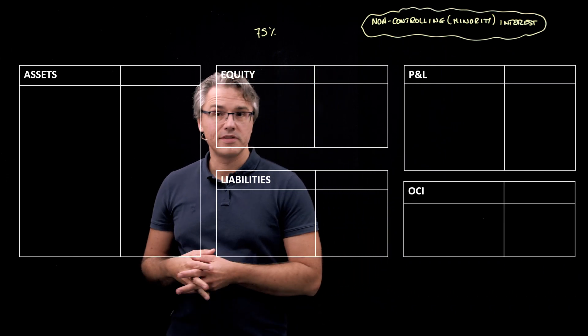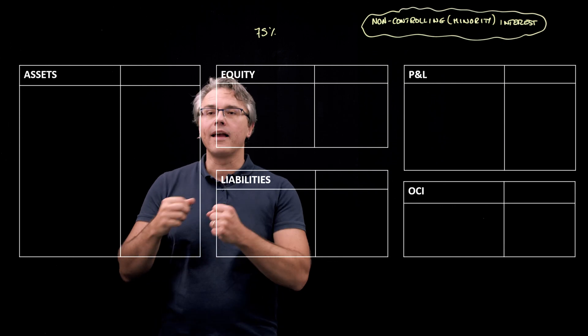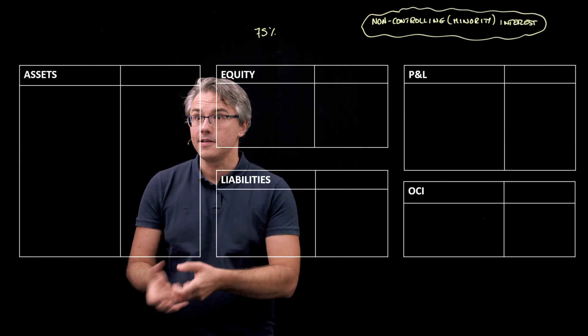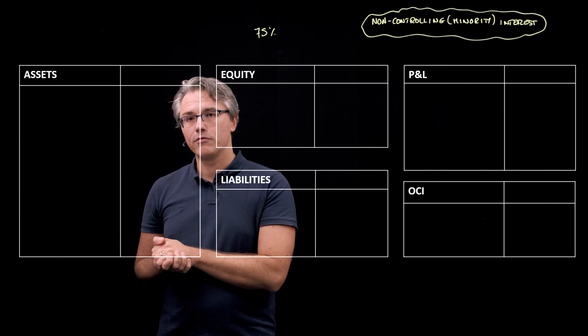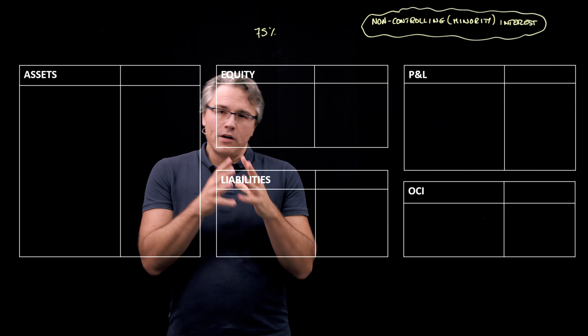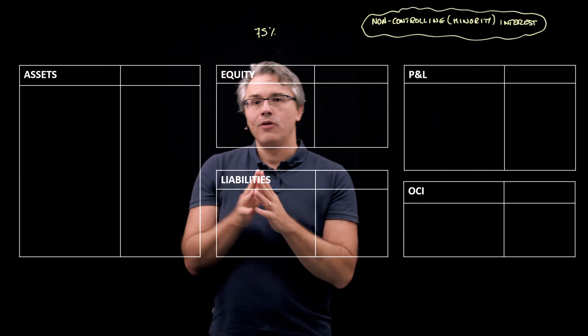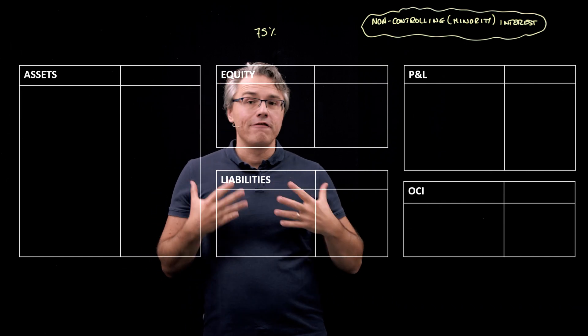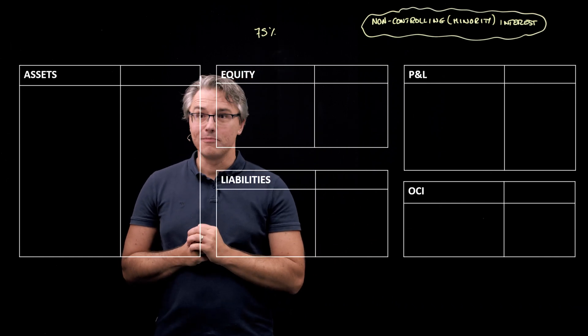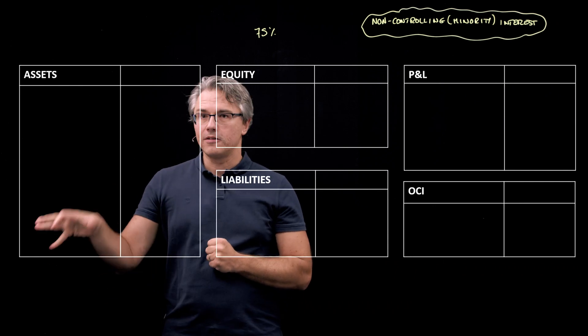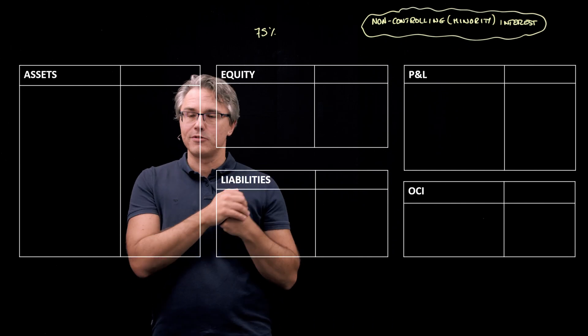Previously when we owned 100% of the share capital, it was quite obvious that we should be adding everything that the other company has and consolidating it with our own group assets. One of the biggest mistakes people make in this exam when it comes to questions relating to consolidations is that they think that owning 75% of the share capital means you should be consolidating 75% of the assets, liabilities, income, and expenses of the subsidiary. That's absolutely not the case.